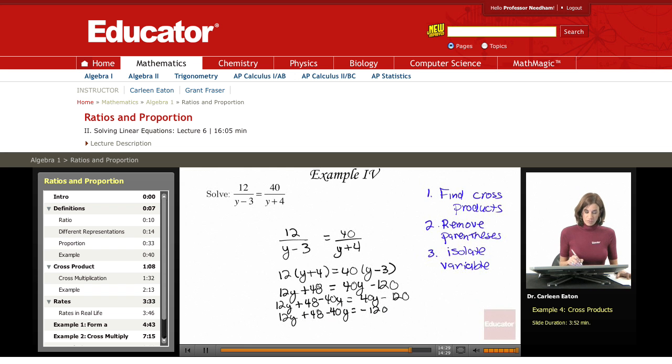And 12y minus 40y is minus 28y plus 48 equals negative 120. Moving the 48 over to the right side by subtracting both sides by 48 gives minus 28y equals minus 120 minus 48.